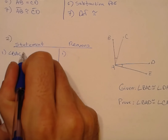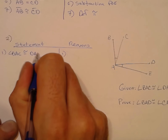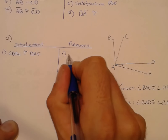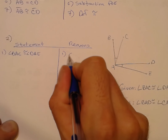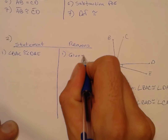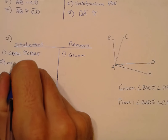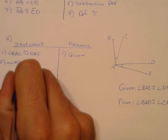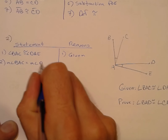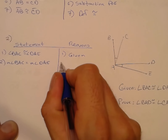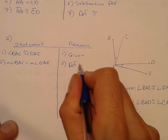Angle BAC is congruent to angle DAE — given. That means the measure of angle BAC is equal to the measure of angle DAE by definition of congruence.